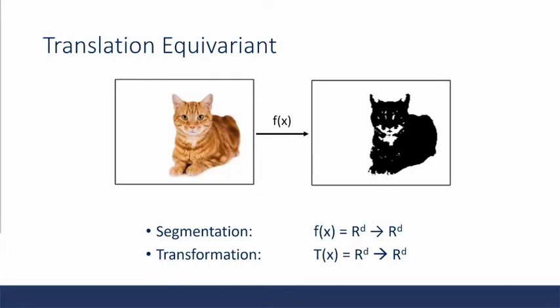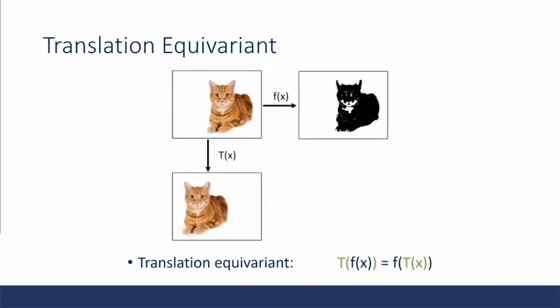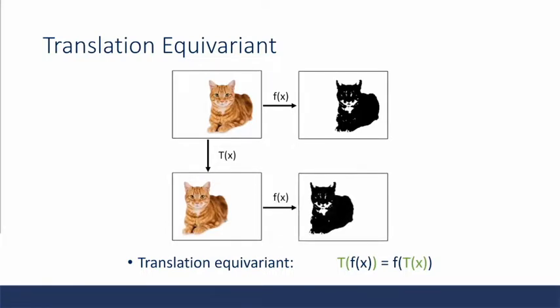To illustrate equivariance, we're going to use segmentation. Given this image on the left-hand side, our model outputs the mask of the area it detects as the cat. Now if we translate our cat to the left, then we get this new segmentation output. But we can note that the output of this translated input is actually the same as translating the original output. So transformation equivariance is when the transformation of f equals f of the transformed x.